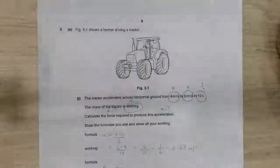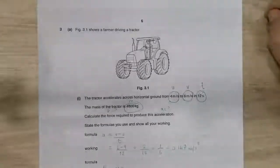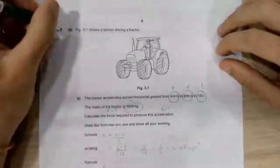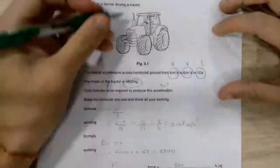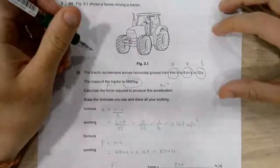Alright guys, we're looking at 0654 Summer 18, paper 4-1, and this is question 3. We've got a question about a farmer driving a tractor, and you're given a whole load of information. It's a bit of an information dump on you guys.